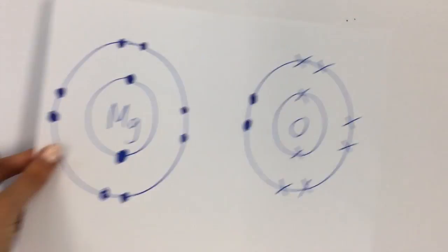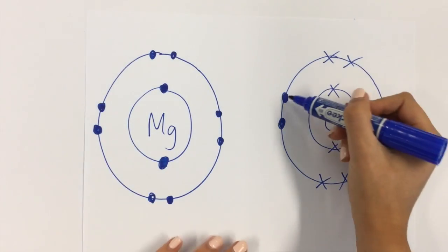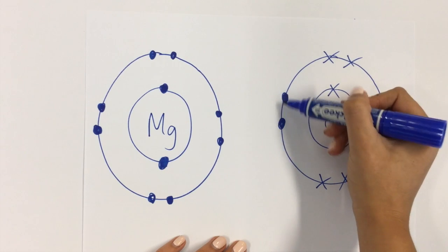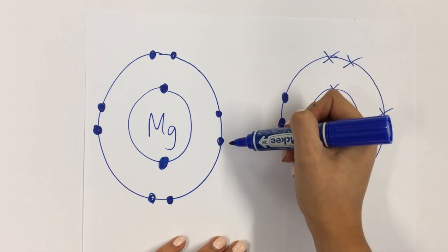This is what it looks like at the end. You can see that I've done these two in circles, just to show that they came from the magnesium.